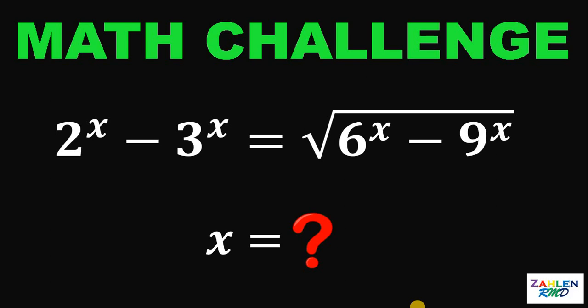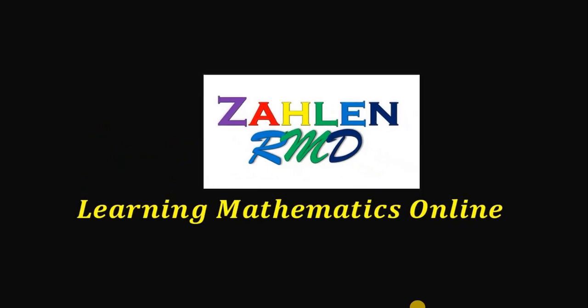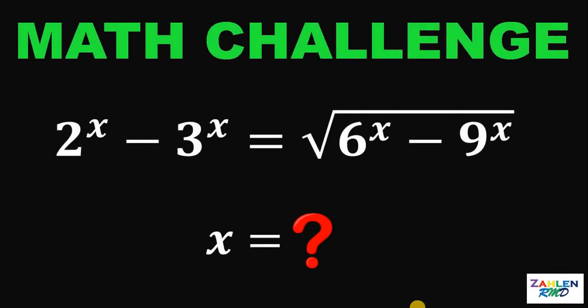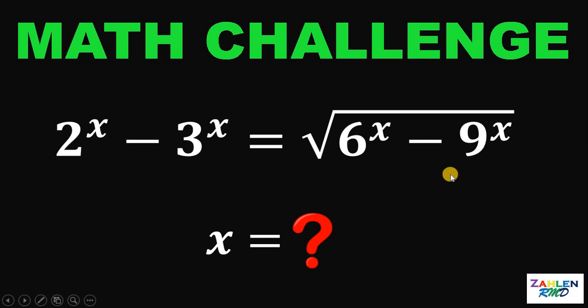Good day everyone, here's our math challenge for today. Here's our question: Solve for the value of x given that 2 raised to x minus 3 raised to x equals the square root of 6 raised to x minus 9 raised to x.